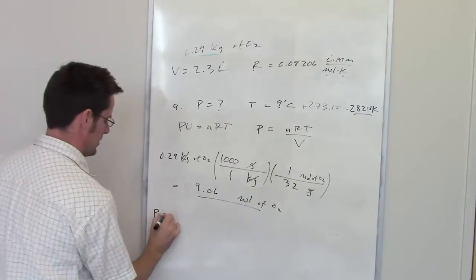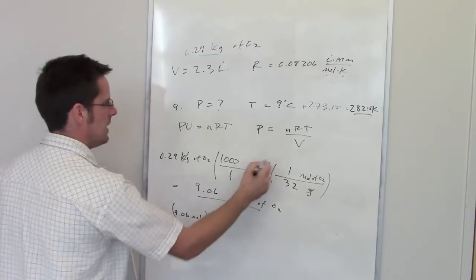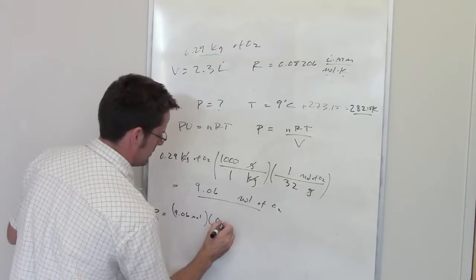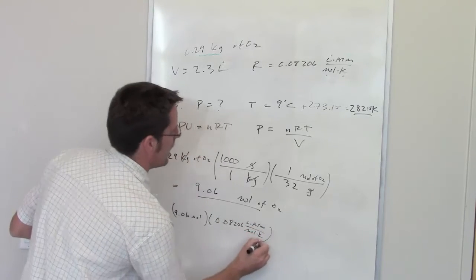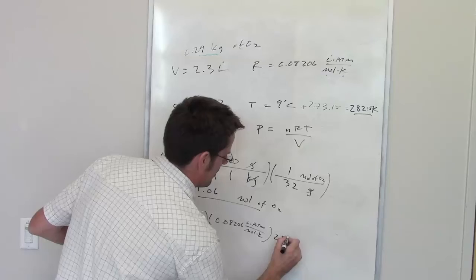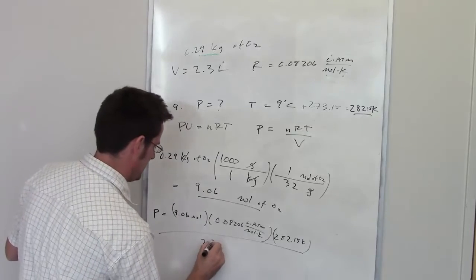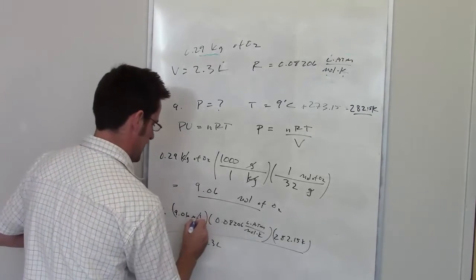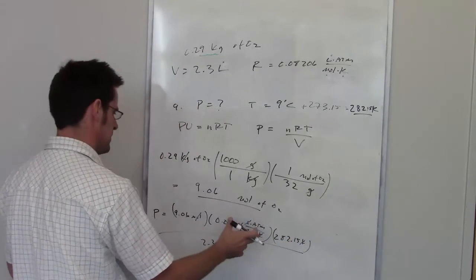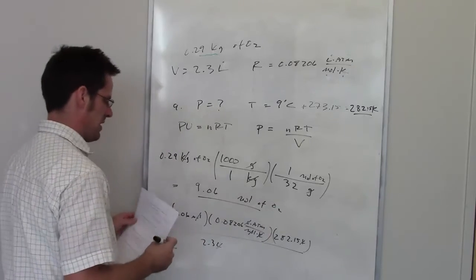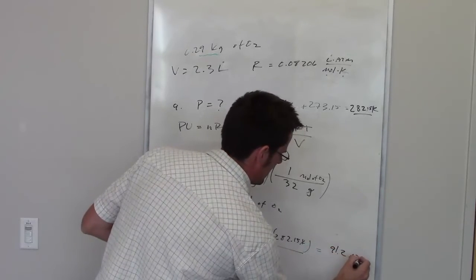Let's go ahead and take this information down here, this equation, and throw everything in here. I've got moles, 9.06 moles for n. I've got R, my ideal gas constant, 0.08206 liter atmospheres per mole kelvin. I've got temperature, which is 282.15 kelvins. And beneath that, I've got my volume, which is 2.3 liters. My moles cancel each other out. My kelvins cancel each other out. My liters cancel each other out. I'm left with units of atmospheres, which are the units of pressure that I'm looking for. When I threw that in my calculator, I ended up getting 91.2 atmospheres.